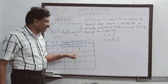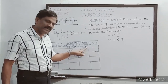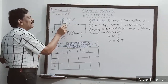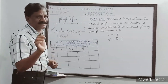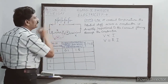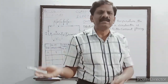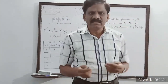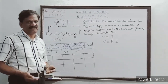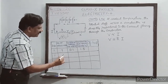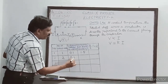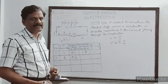Next, I will remove this connection and include two cells. When two cells are included in the circuit, naturally the current will be more than the previous case.